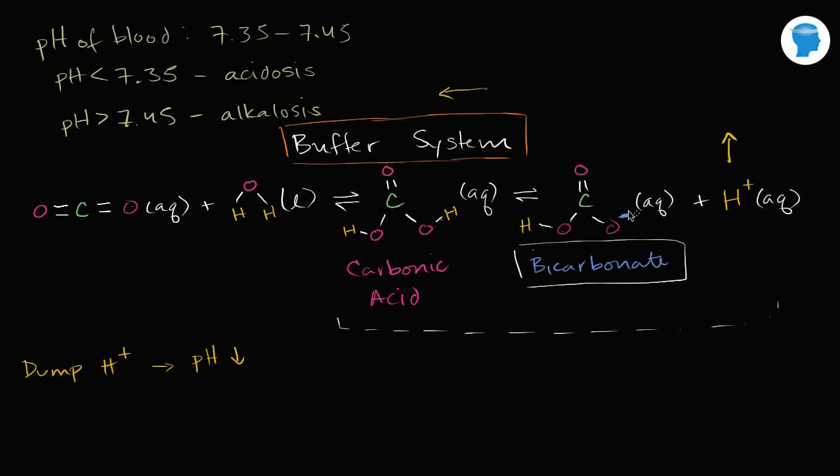So the more hydrogen ions you have sitting in the blood, the more likely they're going to bump into the bicarbonate in just the right way to form carbonic acid. And the more carbonic acid that you have in the blood, the less likely that you're going to have the carbon dioxide reacting with the water in order to form more carbonic acid. So as you add more hydrogen ions, they're just going to be sopped up by the bicarbonate. So this equilibrium, the set of equilibrium reactions is going to move to the left. So you're not going to have as big an effect on pH.